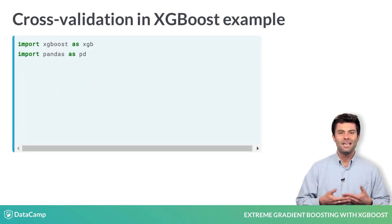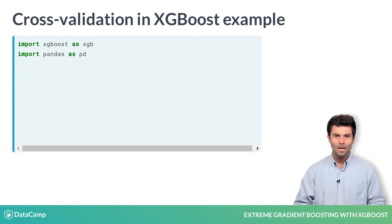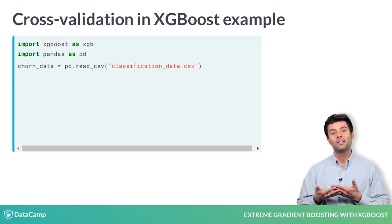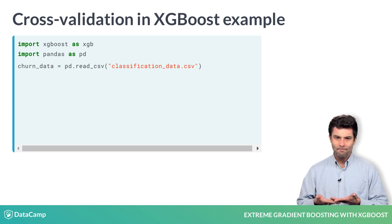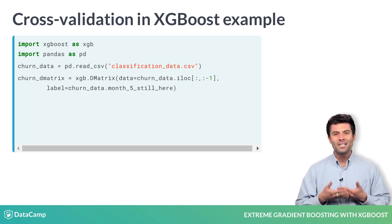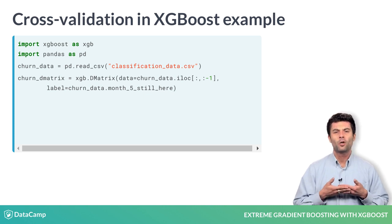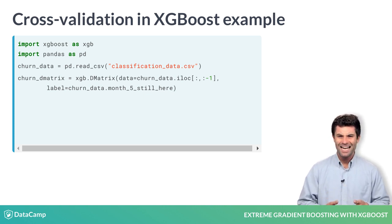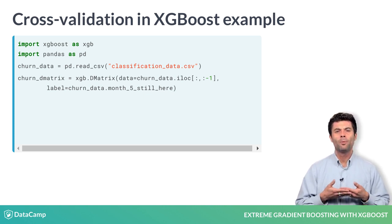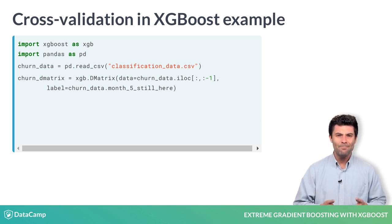So, in lines 1 and 2, we import what we will be using. In line 3, we load in our example data set. In line 4, we convert our data set into an optimized data structure that the creators of XGBoost made that gives the package its lauded performance and efficiency gains, called a DMatrix.